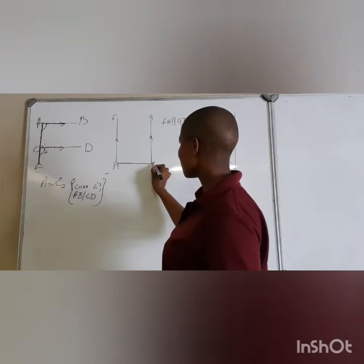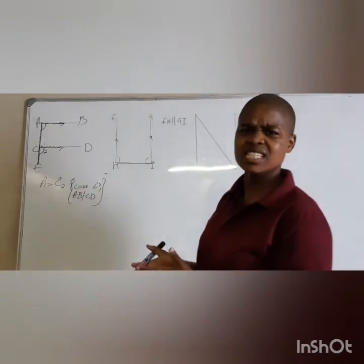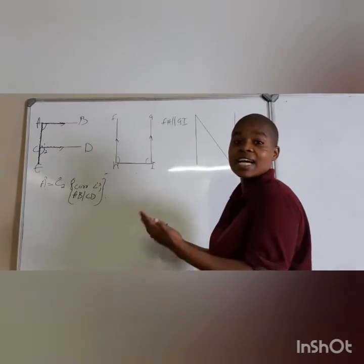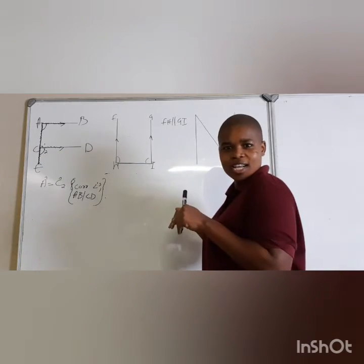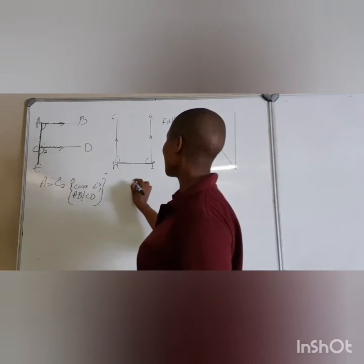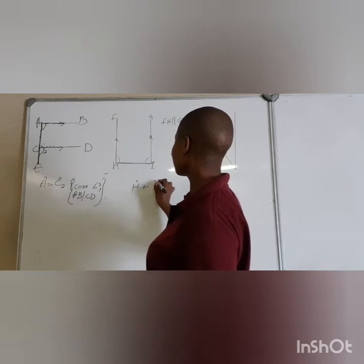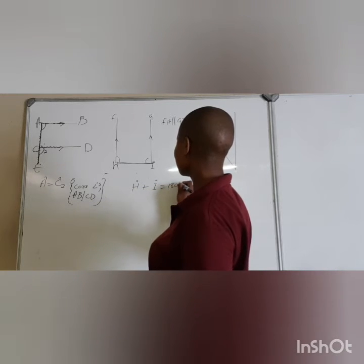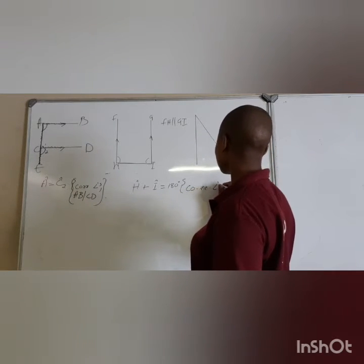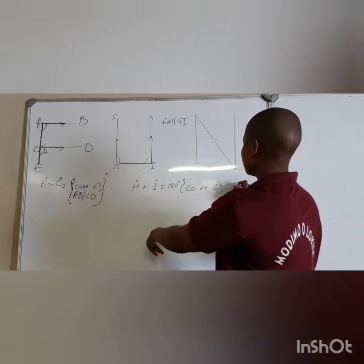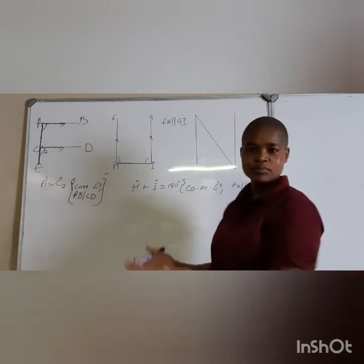Angles are formed — this angle and this angle. They are inside, so we call them co-interior angles. We're going to say: angle H plus angle I equals 180 degrees. Why? They are co-interior angles of parallel lines FH and GR. You see that?